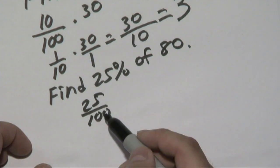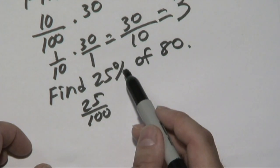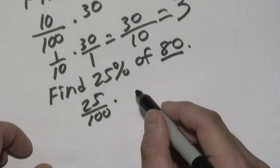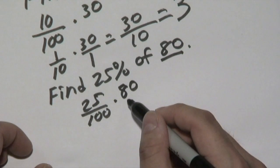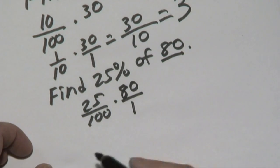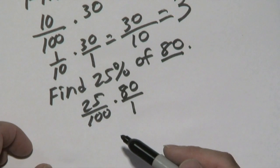Take the 25, divide it by 100. Always take the percent number and divide over 100. And then multiply by the number they give you here, which is 80. If you like, think of 80 as 80 over 1. And again, it's a good idea to reduce fractions. That way you don't have to work with as many large numbers down the road.